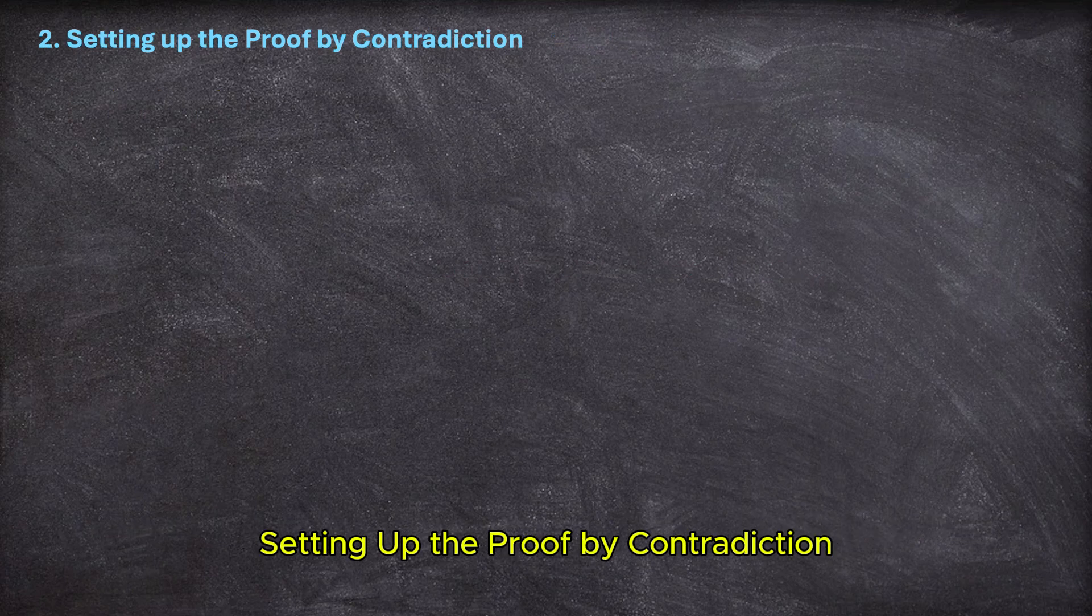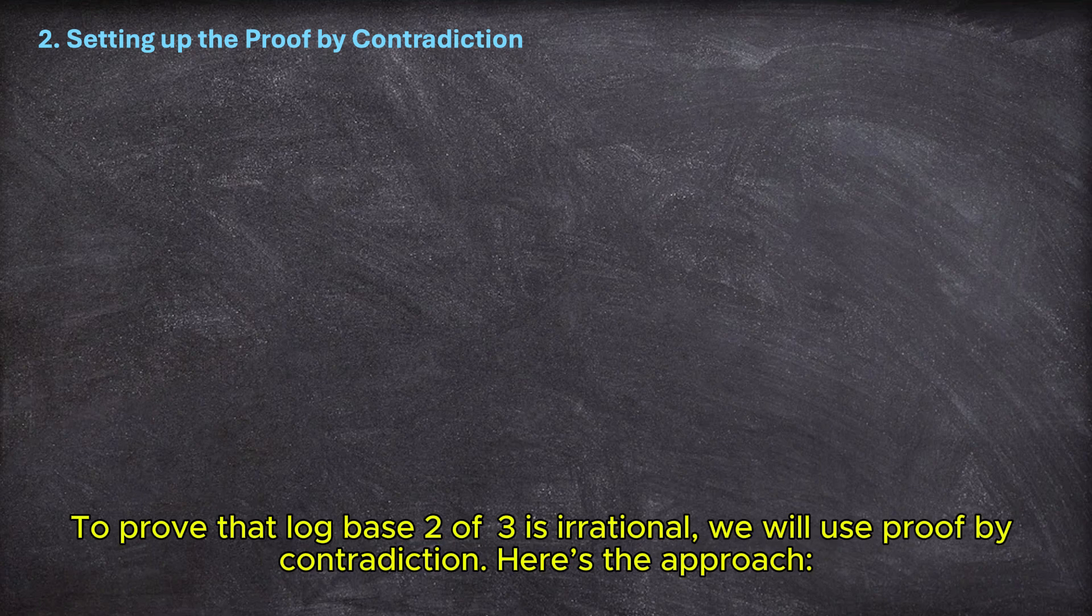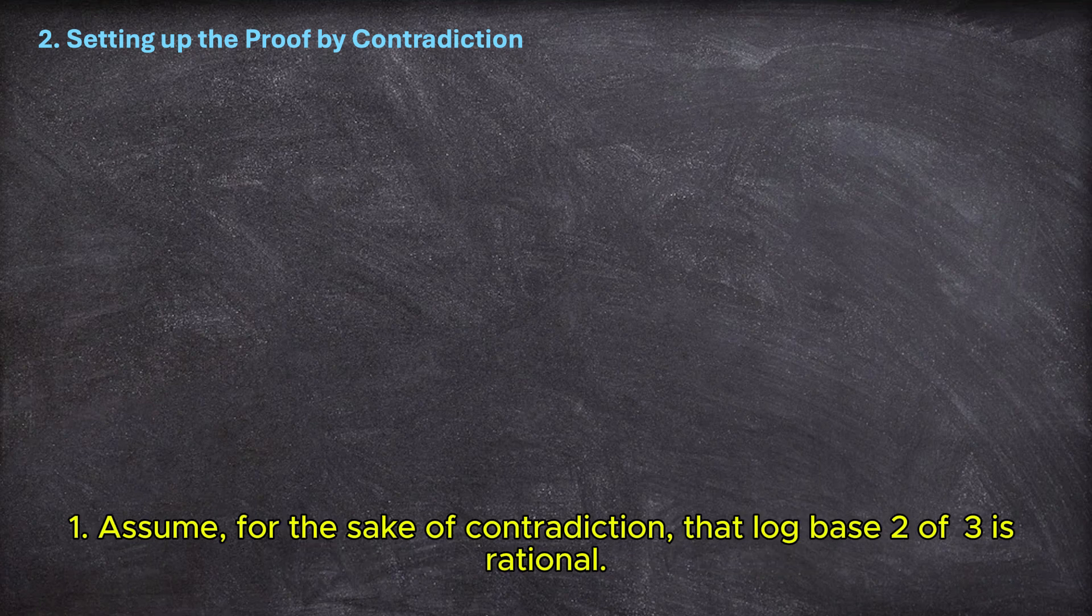Setting up the proof by contradiction. To prove that log base 2 of 3 is irrational, we will use proof by contradiction. Here's the approach. One, for the sake of contradiction, assume that log base 2 of 3 is rational.